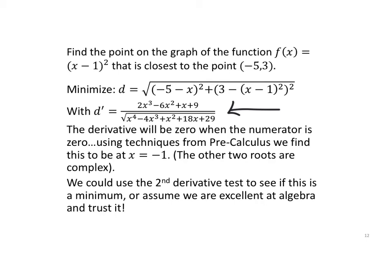Now, a cubic equal to 0. There is a cube formula, and you are more than welcome to look that up, but it takes like a whole page to write it. So, using pre-calculus techniques, I could use the rational zeros theorem and various other things to find that the only real zero of the numerator is when x equals negative 1. The other two roots are complex.